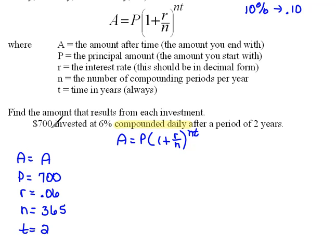If we have $700 invested at 6% compounded daily after a period of two years, we're supposed to be finding the amount that results from that investment. We're supposed to be finding that amount after time, which is exactly the variable we don't have, so we have everything correct.